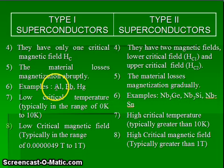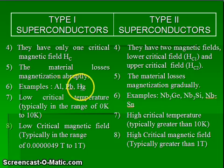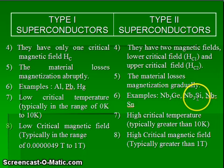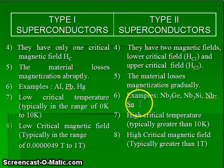Examples of type 1 superconductors are aluminum, lead, and mercury. Whereas examples of type 2 superconductors are Nb₃Ge, Nb₃Si, and NbSn.